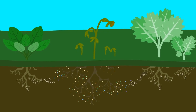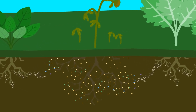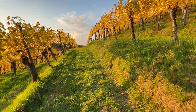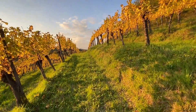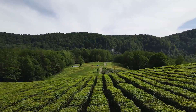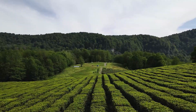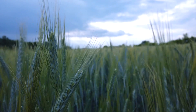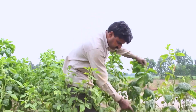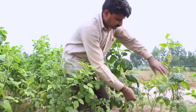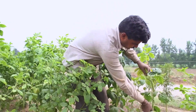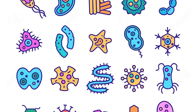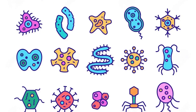Conclusion: Microorganisms are the unsung heroes of agriculture, silently working beneath our feet to support plant growth, combat diseases, and promote sustainable farming practices. As we continue to explore the intricate web of life in our farming systems, let's appreciate and harness the power of these tiny but mighty organisms.